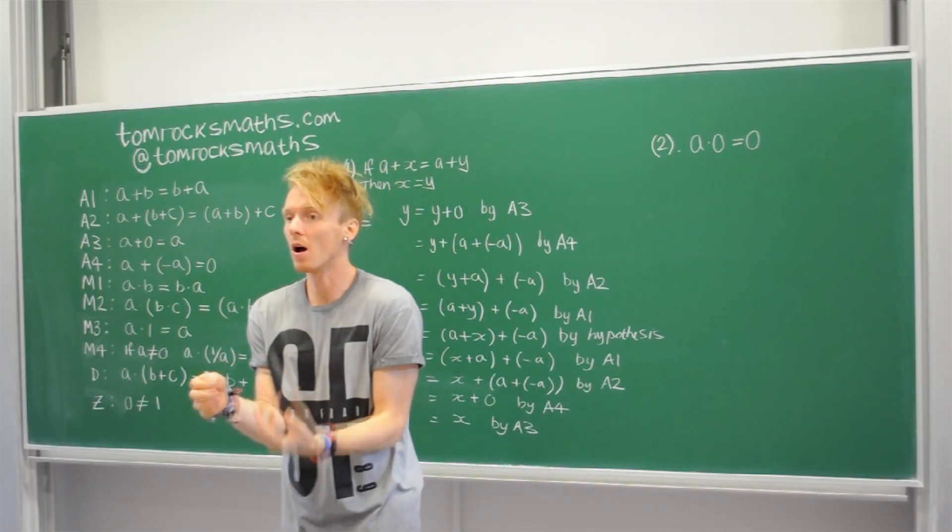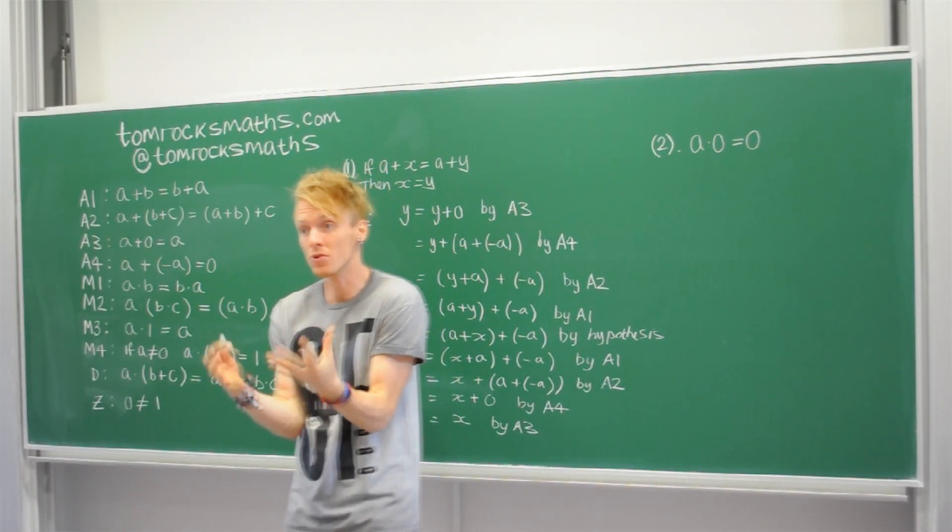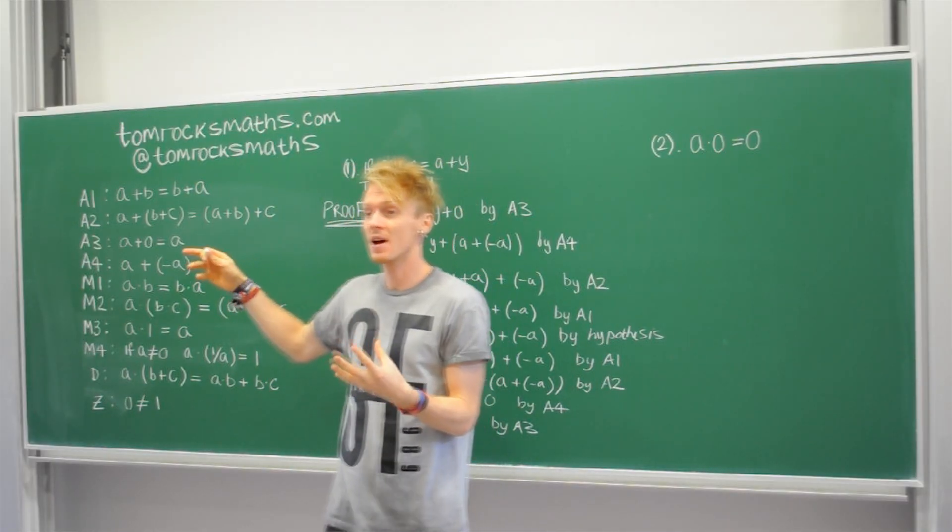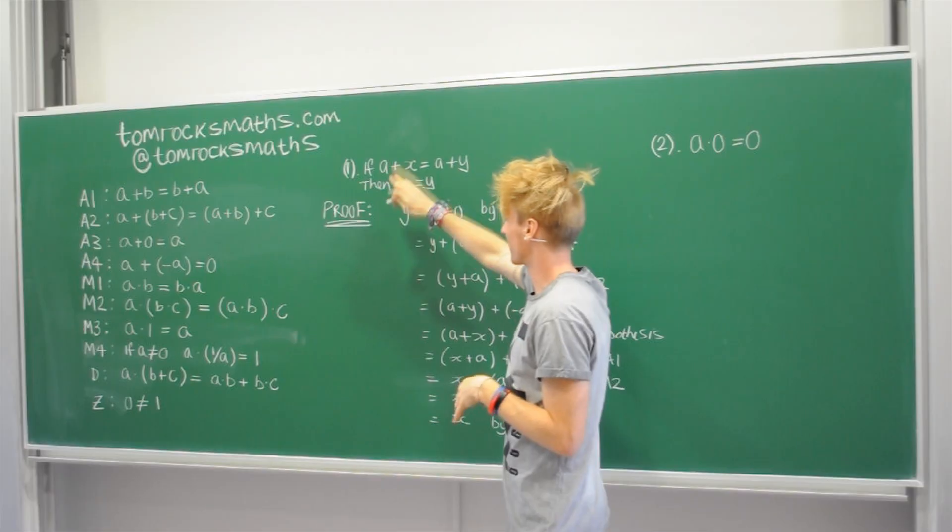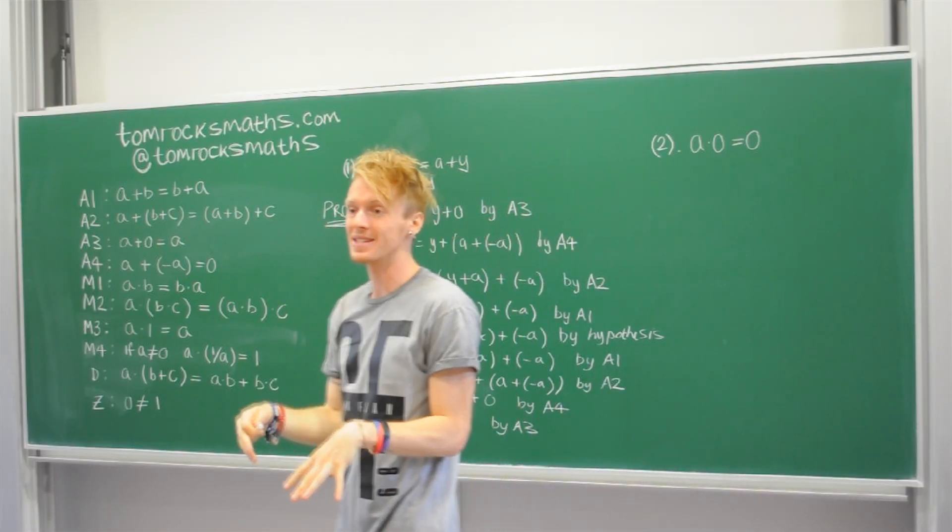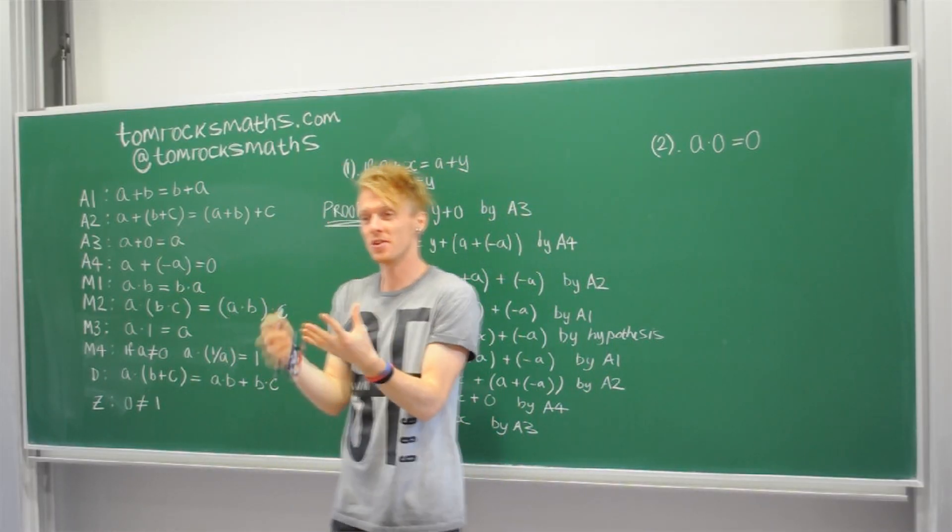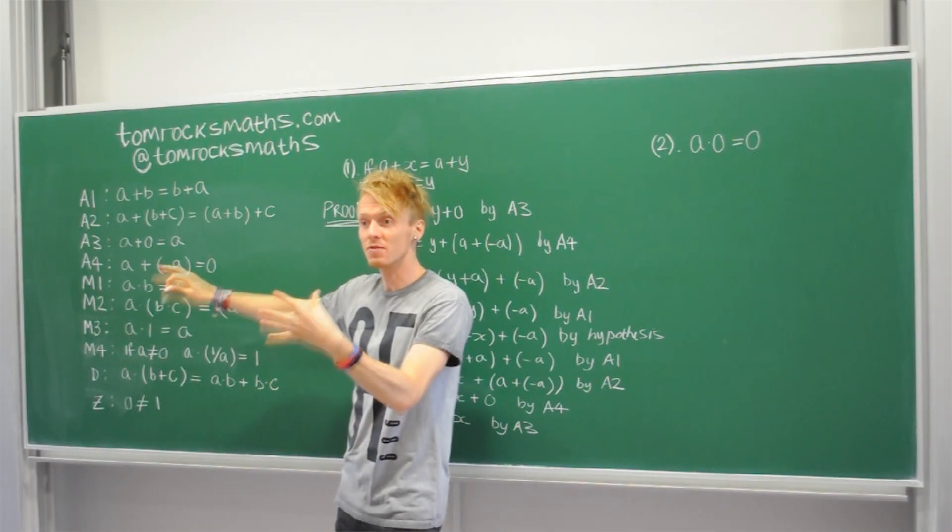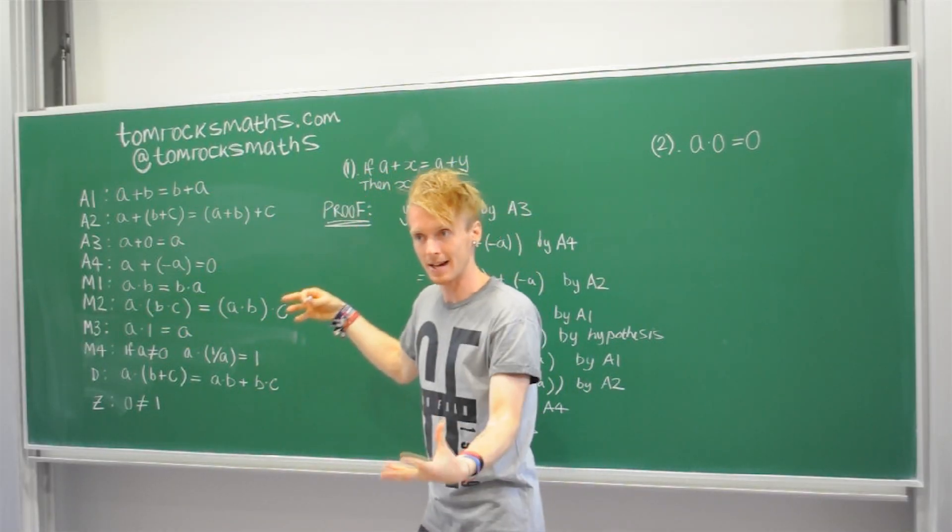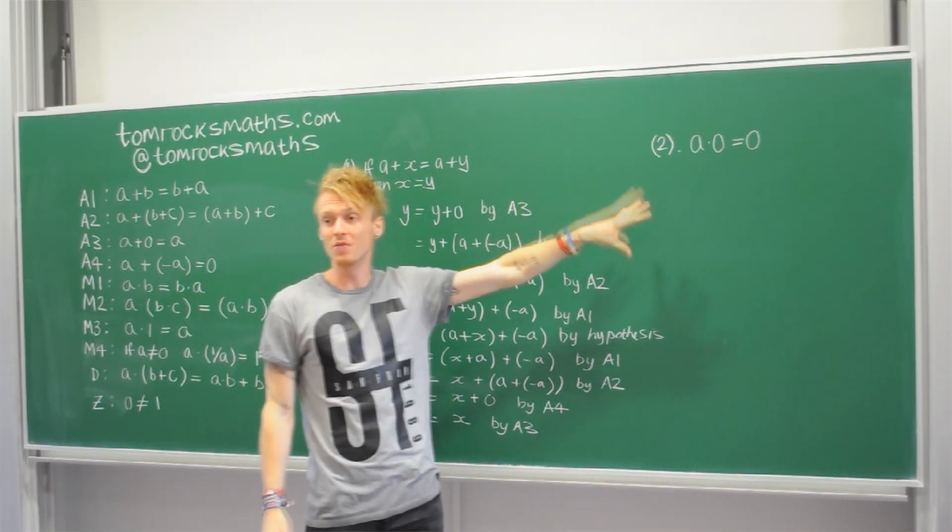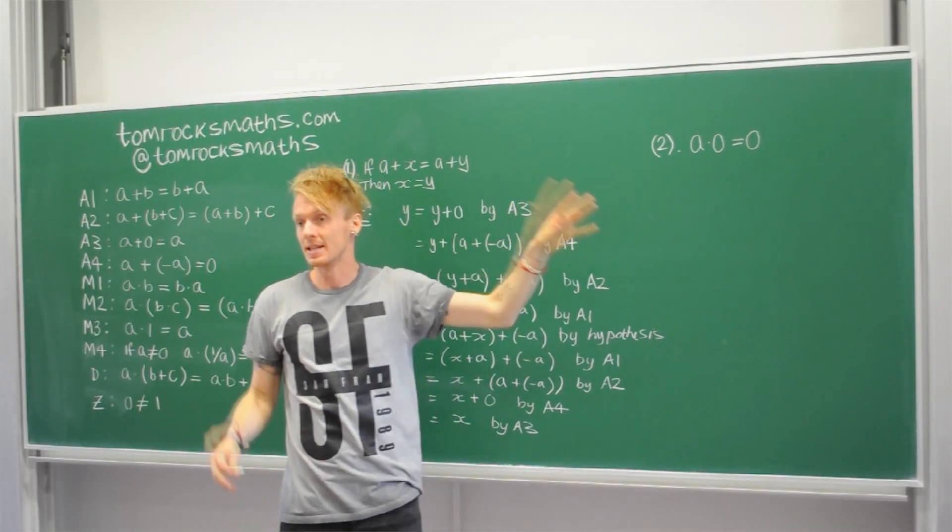So now I'm going to do one more example of a property that we can prove using our axioms. And also, it's going to require us to use our first result here, the cancellation property of addition. So this is showing you how we started with the axioms, we've used them to get this result. And now using this result, plus still the axioms, I'm going to show you how to prove that a times 0 is 0.